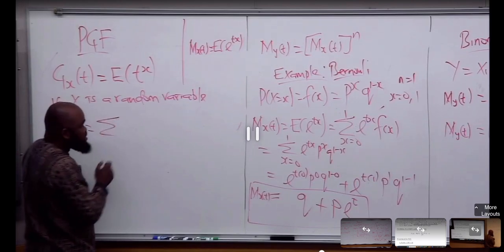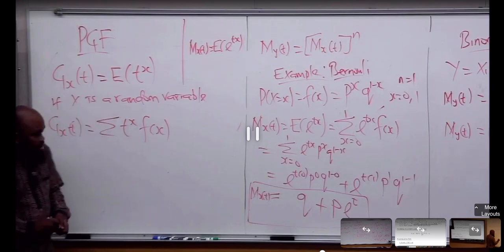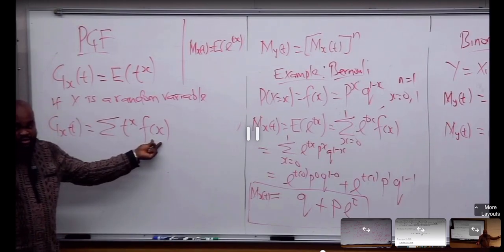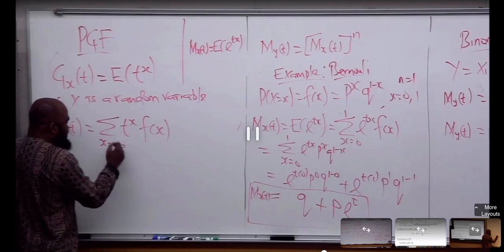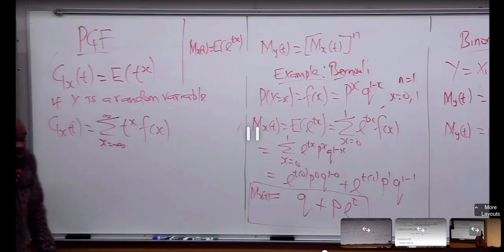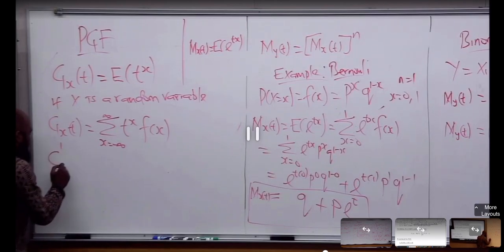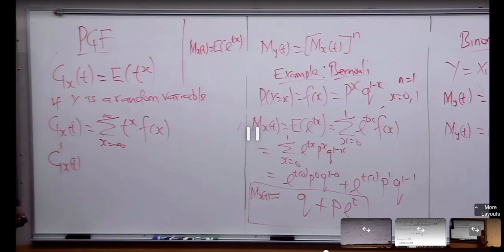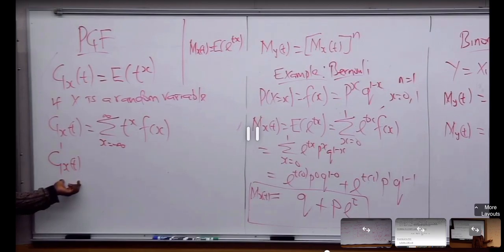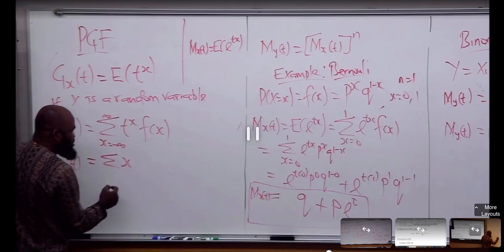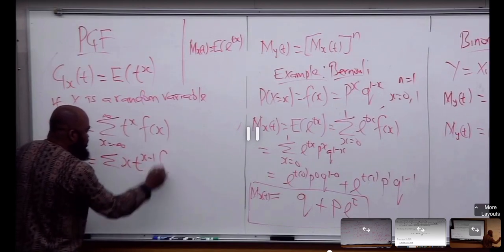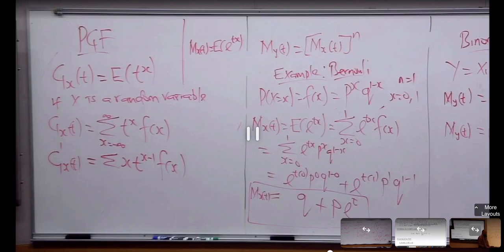G_X of T is going to be a summation. F of X is that particular probability distribution under consideration. If I do the derivative of the probability generating function, it's going to give you X times T to the power X minus 1 times f(X).